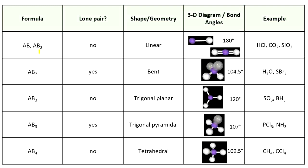The general formula for linear is AB or AB2, meaning a linear shaped molecule has two outside atoms. The first example has no central atom, so both atoms are considered outside atoms. Both linear shaped molecules have a bond angle of 180 degrees. Now, what's the difference between linear and bent? They both have the general formula AB2 and two outside atoms. It comes down to the lone pair — a bent shaped molecule has two lone pairs, whereas a linear shaped molecule does not. A bent molecule has bond angles of 104.5 degrees.